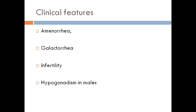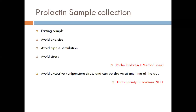Clinical features of hyperprolactinemia are amenorrhea, galactorrhea, and infertility; in males it can present with hypogonadism. Regarding sample collection: prolactin should be taken in the fasting state, as a post-meal elevation may occur; exercise should be avoided; nipple stimulation can increase prolactin levels. Chest surgery or herpes zoster in that area can cause prolonged nipple stimulation, giving falsely high prolactin. Acute stress — even painful venipuncture — can also slightly elevate prolactin levels.